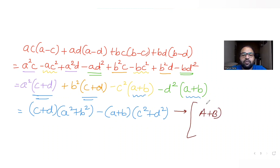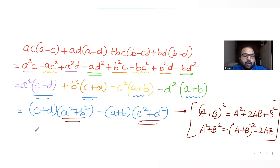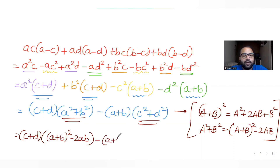Using the identity (a + b)² = a² + 2ab + b², we can write a² + b² = (a + b)² - 2ab, and similarly c² + d² = (c + d)² - 2cd. So the expression becomes (c + d)·[(a + b)² - 2ab] - (a + b)·[(c + d)² - 2cd].